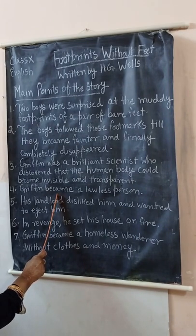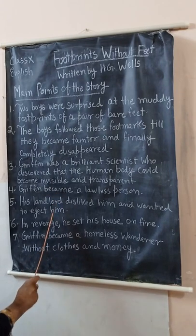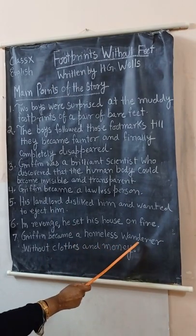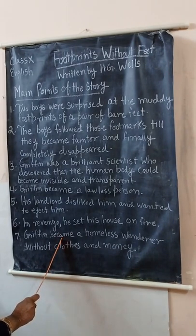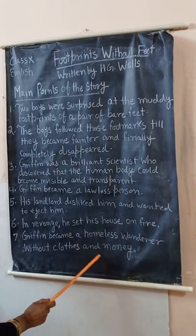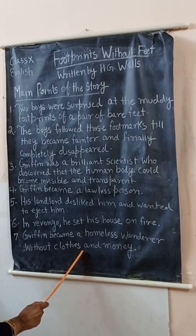Griffin carried out many experiments to prove that the human body could become invisible. In the end, he swallowed some rare drugs and his body became transparent. He was a lawless person — his landlord disliked him and tried to eject him, so in revenge Griffin set his house on fire. Griffin became a homeless wanderer without clothes and money. He had to remove all his clothes if he wanted to be unseen by people, and he left footmarks as he walked.